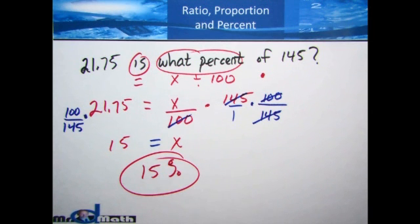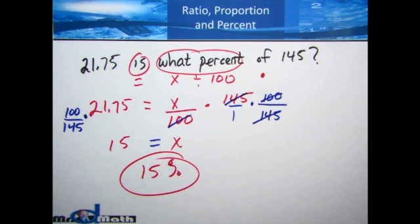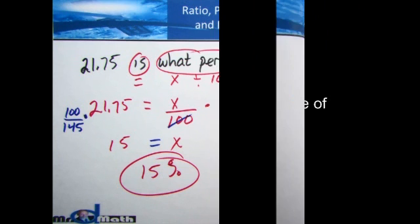It is just that simple. Now you're going to be looking at coursework for yourself. Just remember: 'is' means equal, 'of' means multiply, and 'percent' means divide by 100. Whenever you see the word 'what,' that's your variable x. Do the coursework, check your answers when you're done, and join us in the next section.